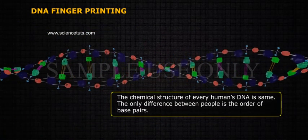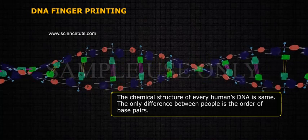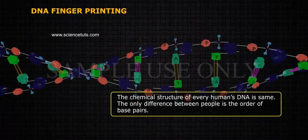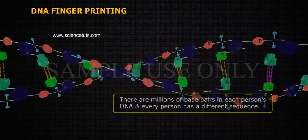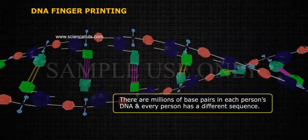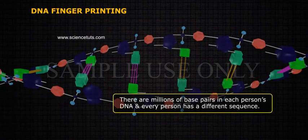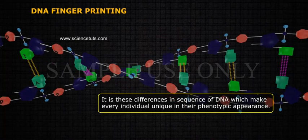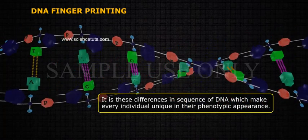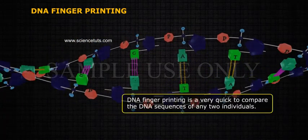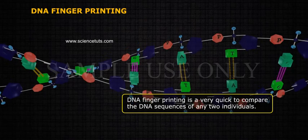The chemical structure of every human's DNA is the same. The only difference between people is the order of base pairs. There are millions of base pairs in each person's DNA and every person has a different sequence. It is these differences in sequence of DNA which make every individual unique in their phenotypic appearance. DNA fingerprinting is very quick to compare the DNA sequences of any two individuals.